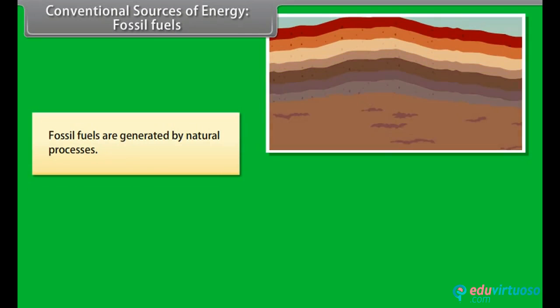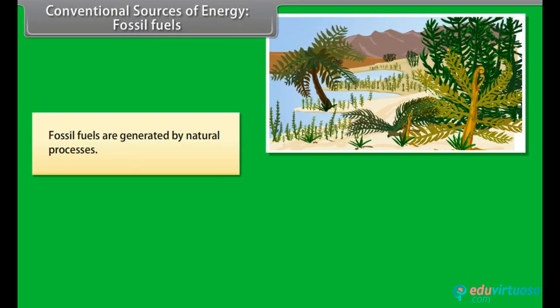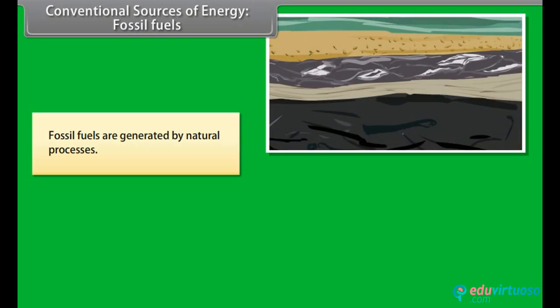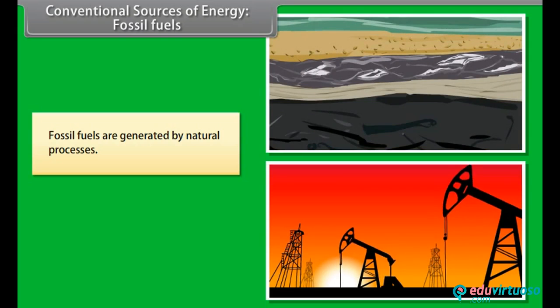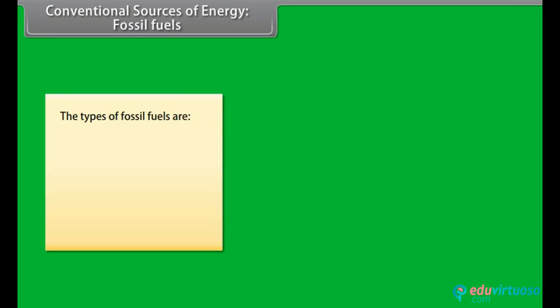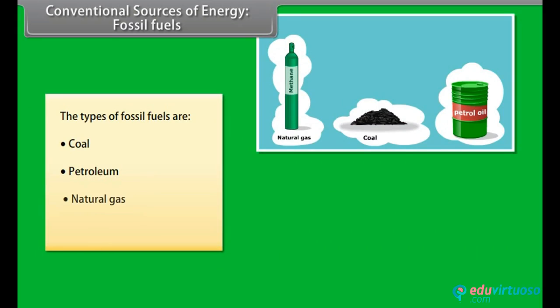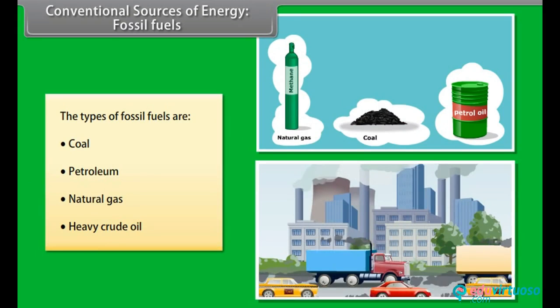Conventional sources of energy — Fossil fuels. Fossil fuels are generated by natural processes. They include a high percentage of carbon. These are non-renewable sources of energy, as they take millions of years to form. The reserves of these fuels are reducing at an alarming rate. The types of fossil fuels are coal, petroleum, natural gas, and heavy crude oil.